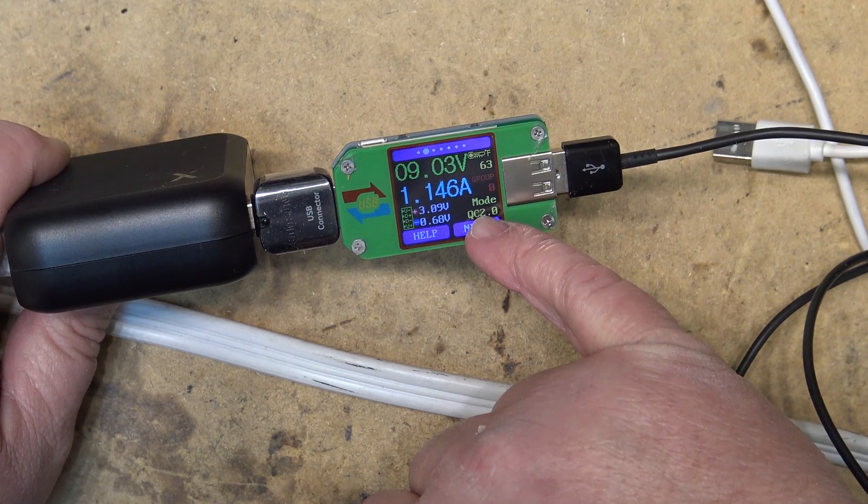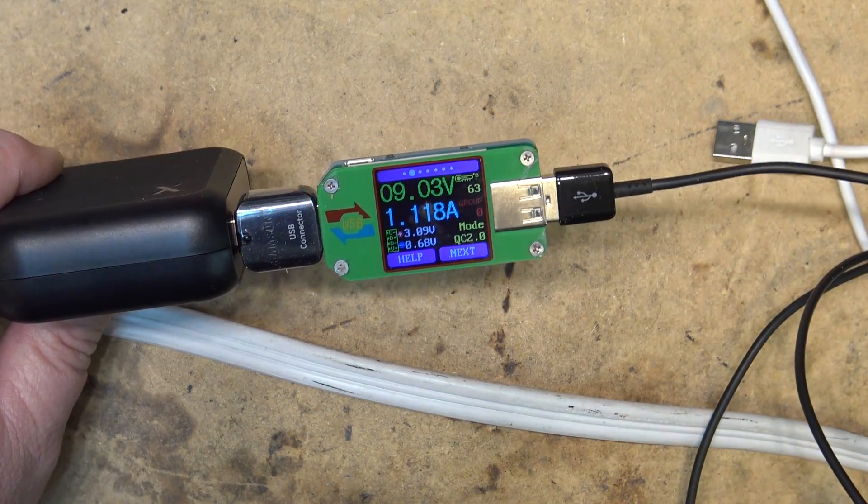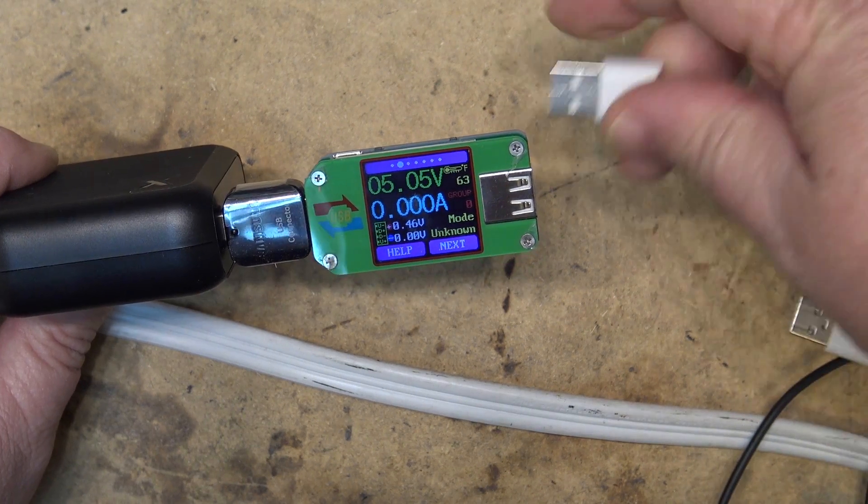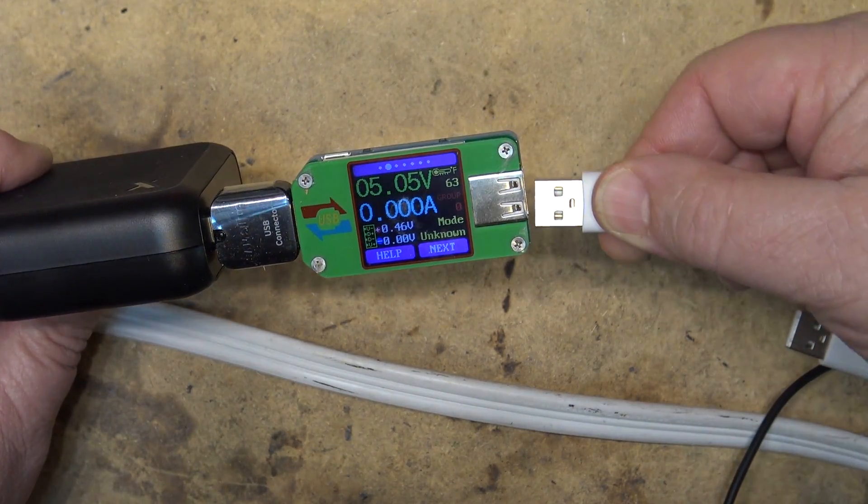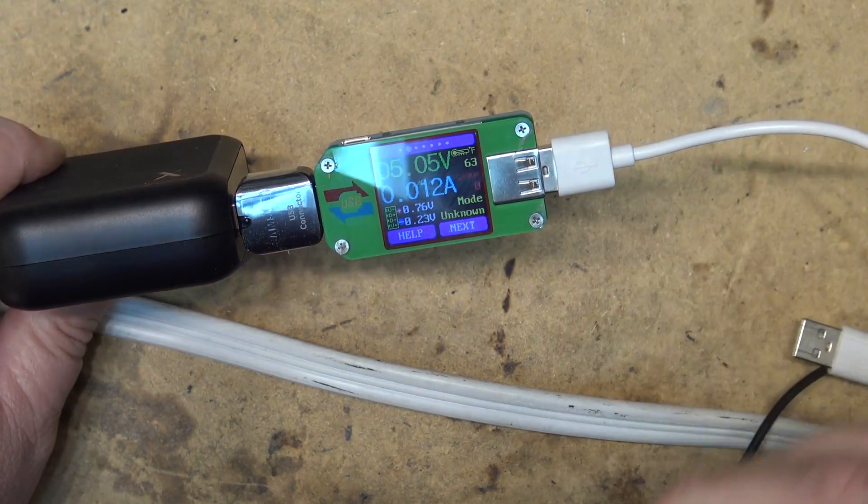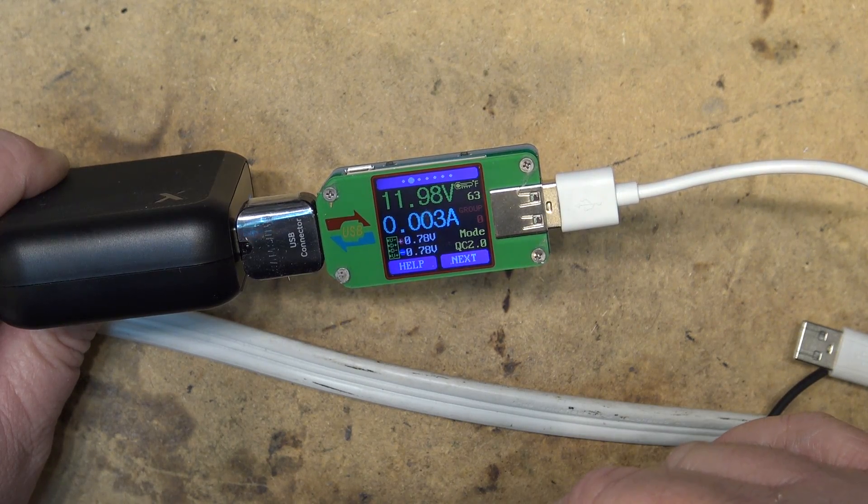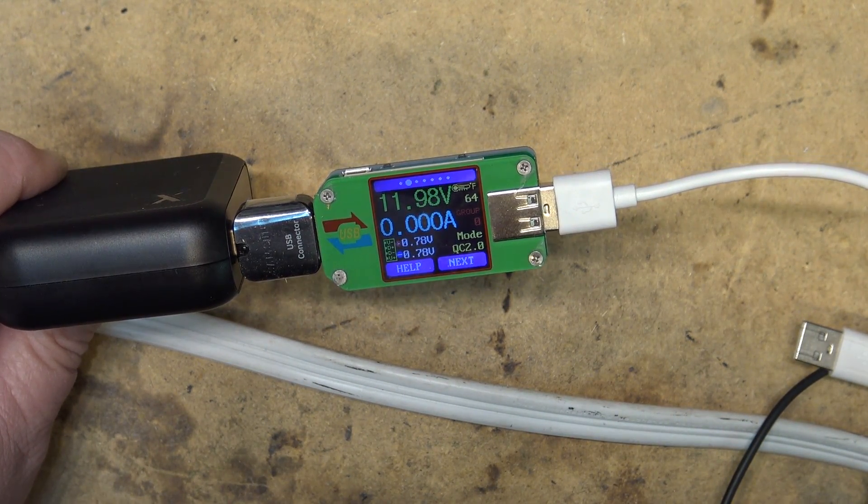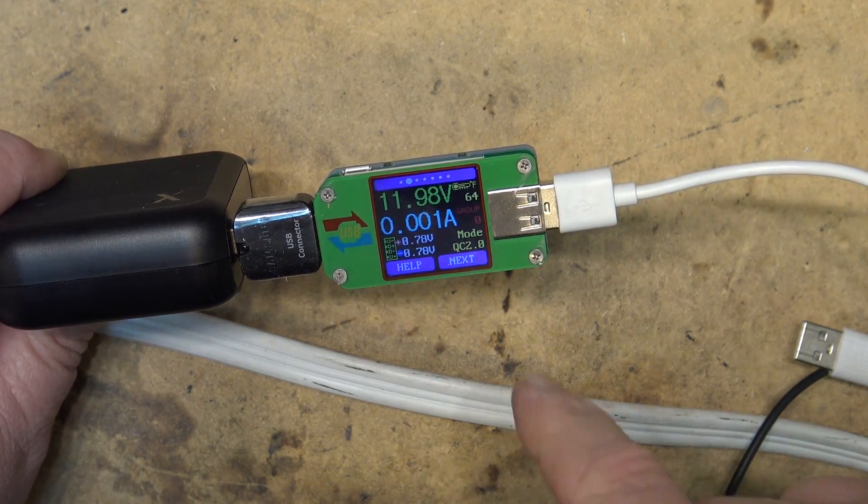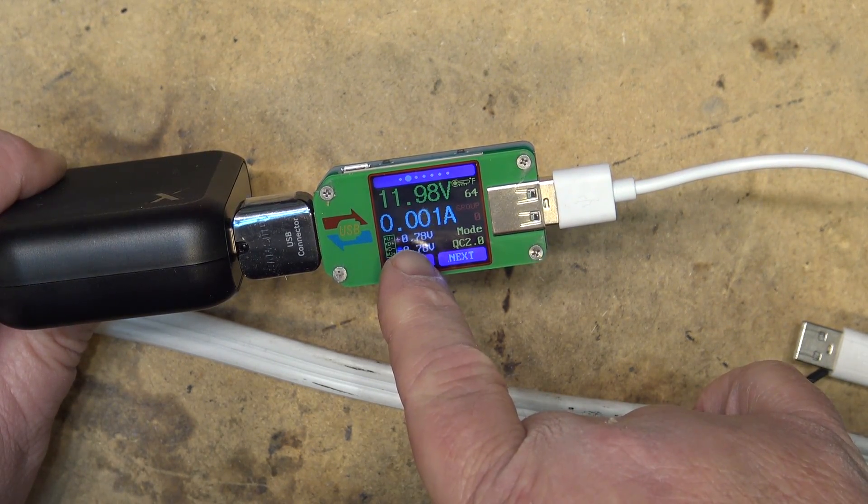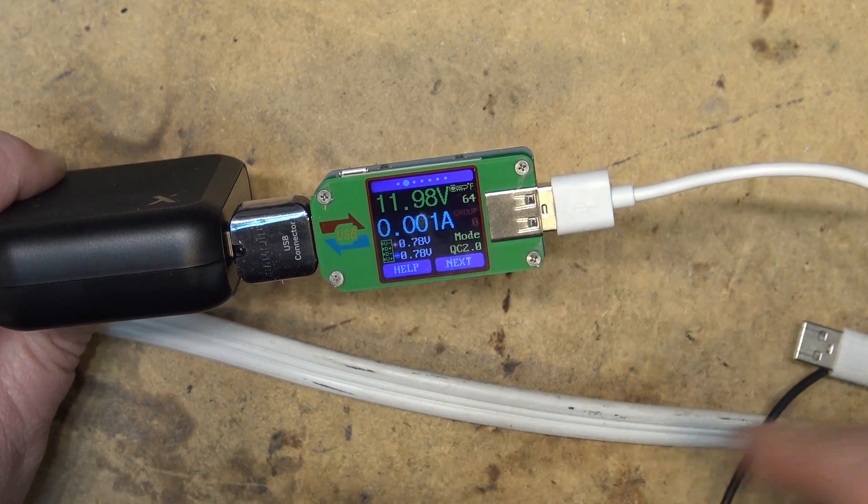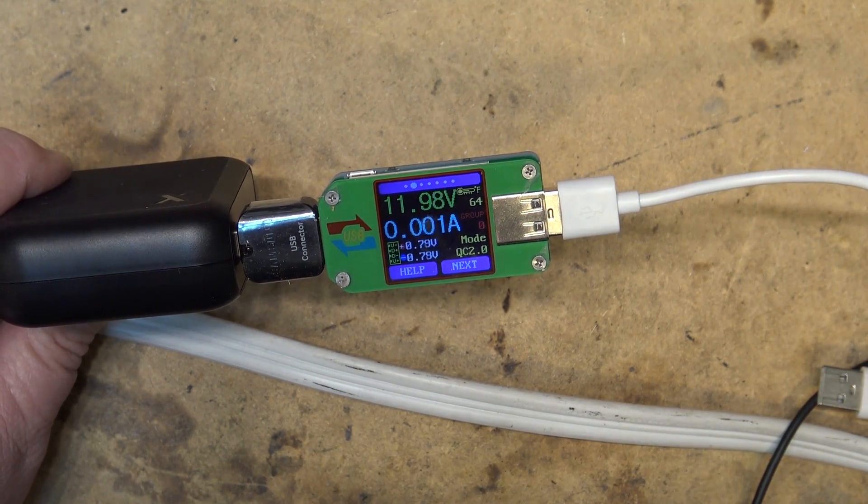The next mode is my wireless charger. When I plug in my wireless charger, this one is also Quick Charge mode 2, but it's capable of 12-volt charging. By changing the voltage on the data lines, it determines that this is a 12-volt capable device and it goes into 12-volt mode.